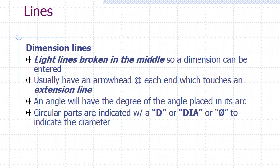Dimension lines are fine light lines with an arrowhead at each end to show the measurement of a main object line.